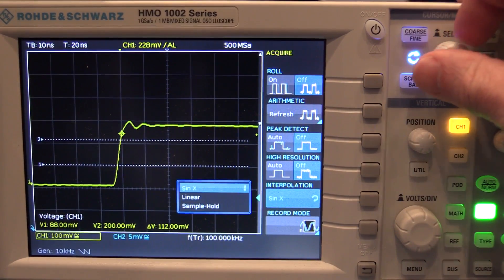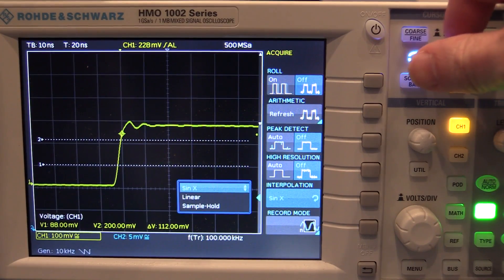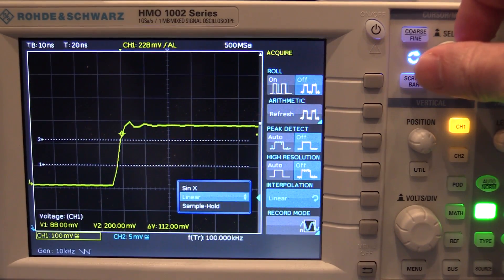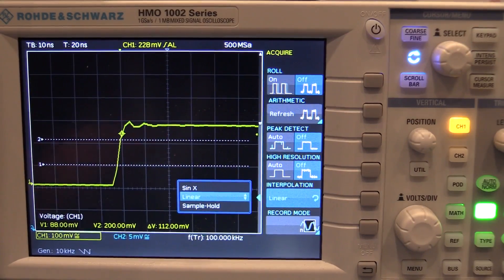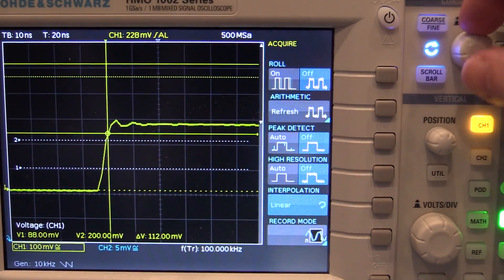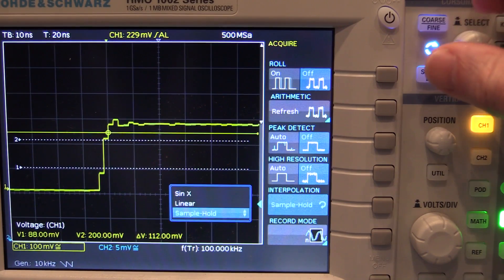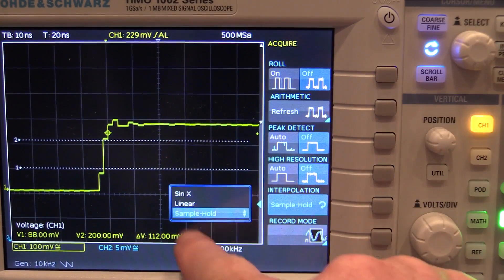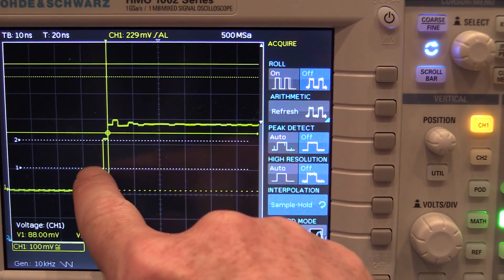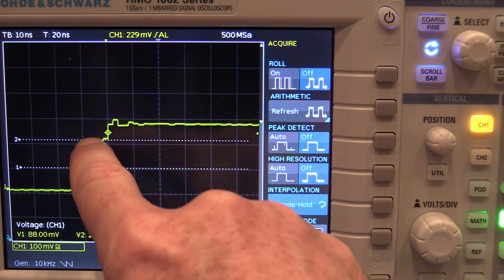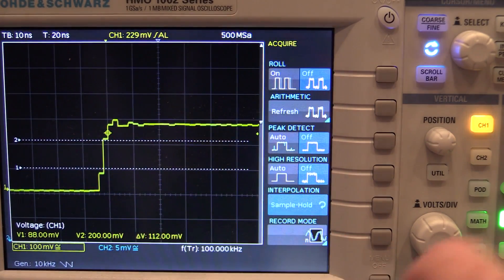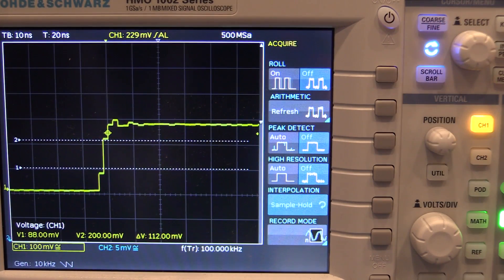This interpolation here. It's got like sine X on X which is your default, which is your average one. Then we've got linear. Of course you can see it go a bit, you know, a bit linear there. Just the old straight line. And look, the interesting thing is we've got a sample and hold. It takes a sample, holds it. Lovely. Fantastic. You know that might be useful for some people.